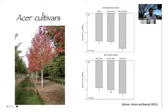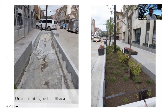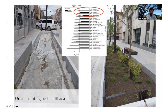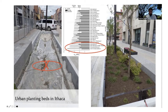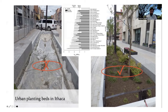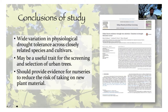For a challenging urban site, you could use a scheme like this to say that those with a less negative turgor loss point are not going to perform well in constrained rooting environments — they're likely to dry out quickly. You'd be much better off selecting from species with much more inherent drought tolerance. We concluded that the turgor loss point is a really helpful measure of drought tolerance and could be useful for screening urban trees.